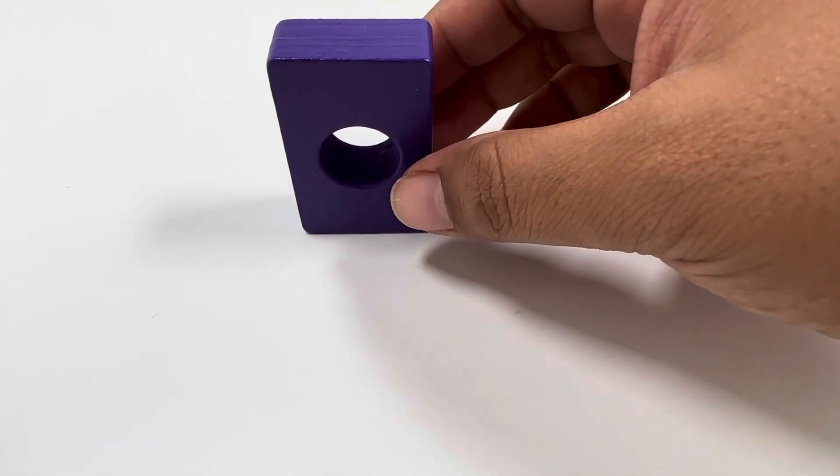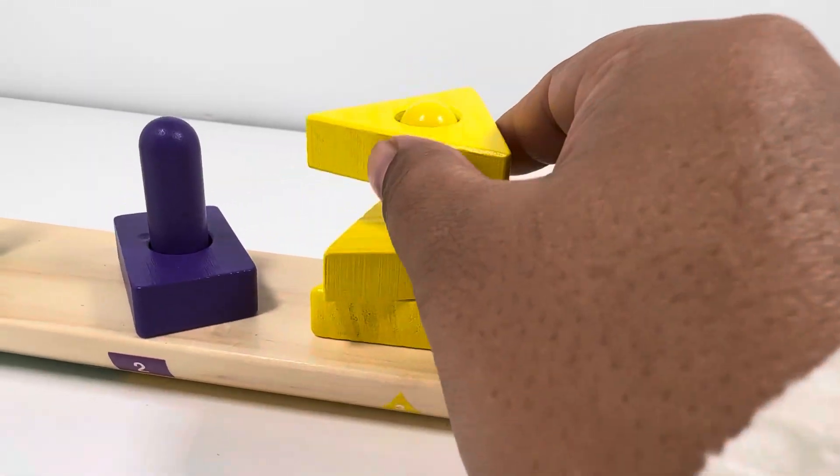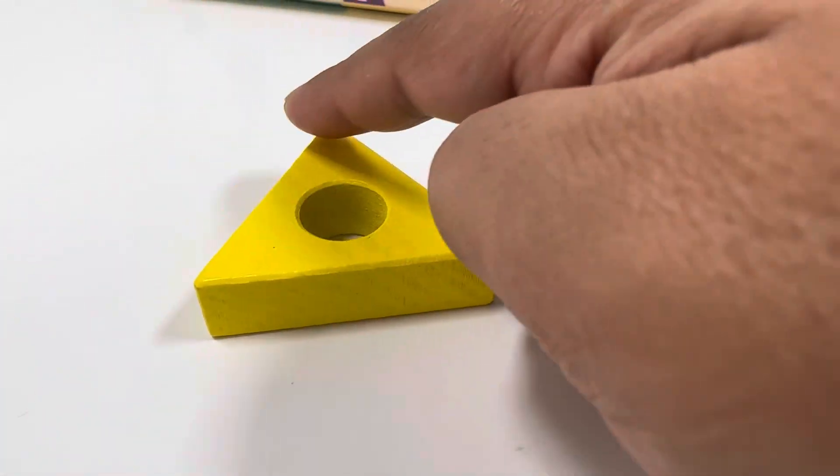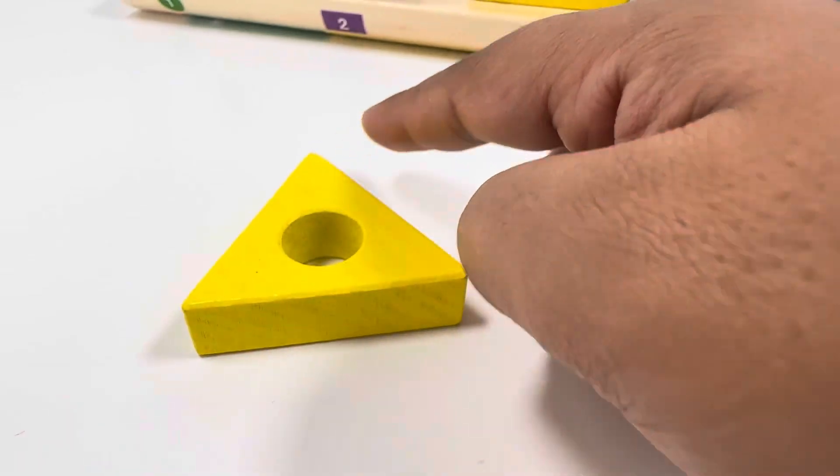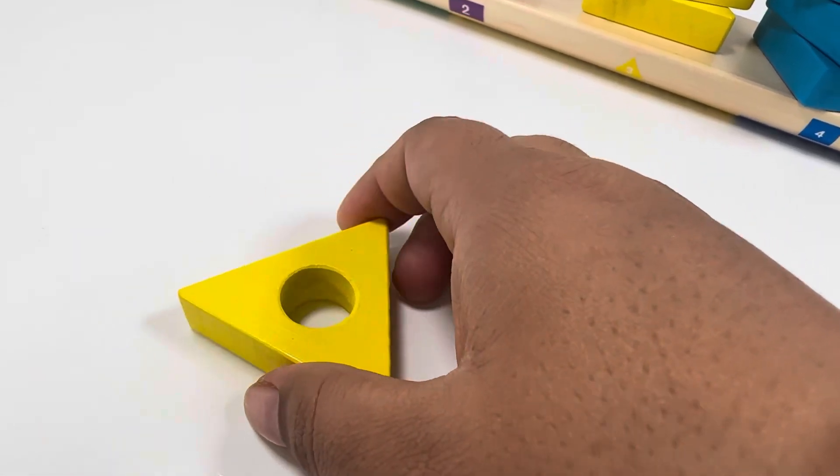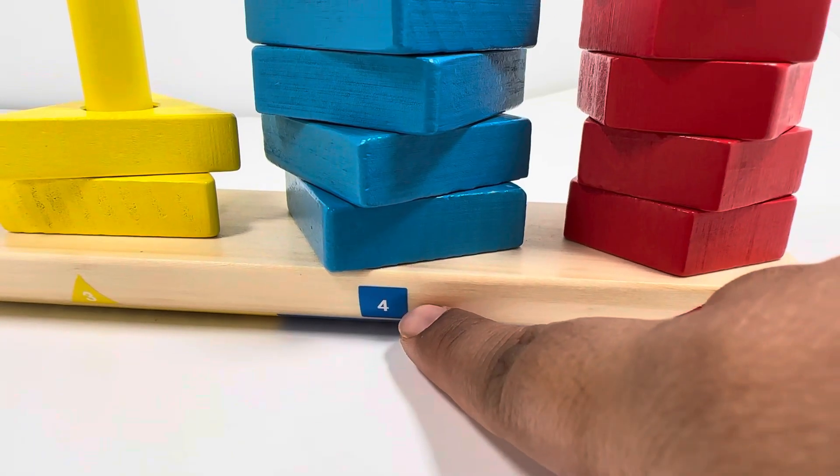The third shape is yellow color and it's a triangle. A triangle has three sides: one, two, three. Do you know what a triangle looks like? Maybe a slice of pizza.